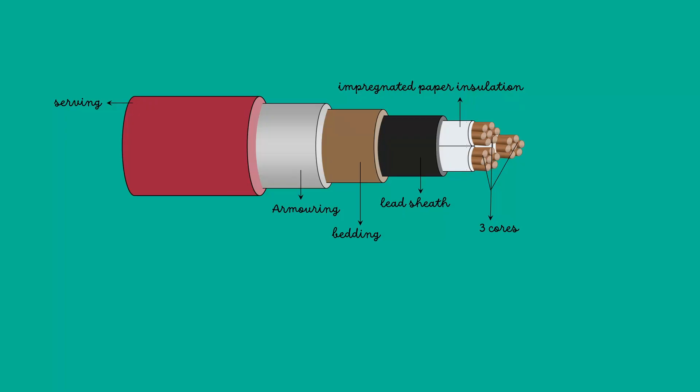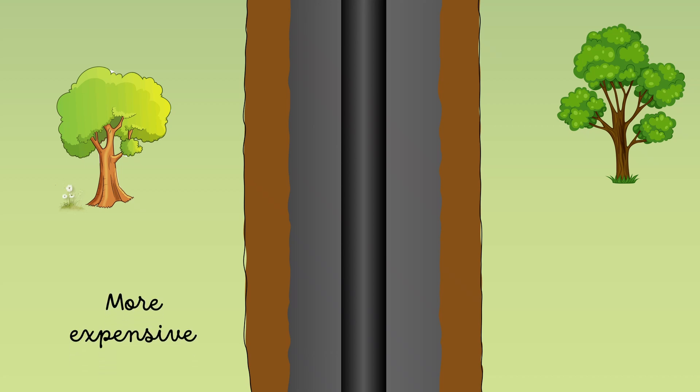Cables laid in this manner are usually plain lead covered because troughing offers good mechanical protection. This system is more expensive than the direct laying system. Due to poor heat dissipation facilities, the current carrying capacity of the cable is reduced.